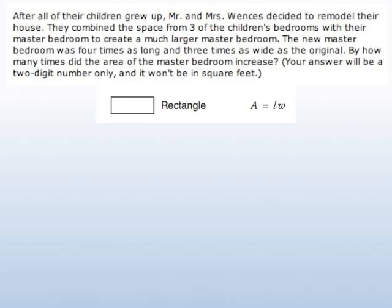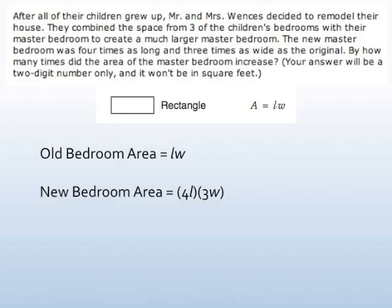Now if we're talking area of a rectangle here, we're talking length times width. Now the length and width for the new bedroom area is going to be different. The length is being multiplied by four and the width is being multiplied by three. It's because we're told that the new master bedroom was four times as long and three times as wide.